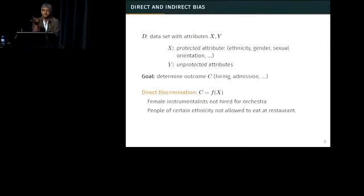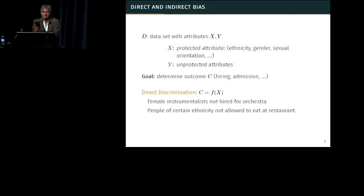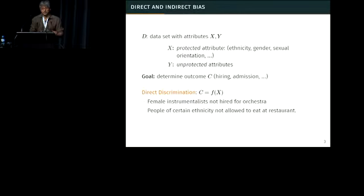Let's try to define what we might mean by bias in algorithms. Let's start off with a data set that has two attributes, X and Y. X is the attribute that you want to protect somehow — it could be ethnicity, gender, sexual orientation, or some kind of attribute that you would not want to use as a way to predict something, because it would be discriminatory. And Y is everything else: unprotected attributes that you presumably could be using to make some kind of prediction. The task might be hiring, admissions, giving someone a loan, or something like that.